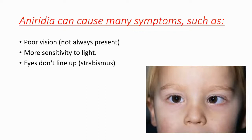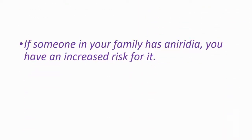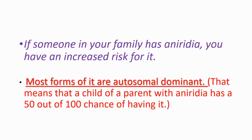You can see one of the children with the condition strabismus in this picture. And if someone in your family has aniridia, you have an increased risk for it, because most forms of it are autosomal dominant. That means a child of a parent with aniridia has a one in two chance of having it.